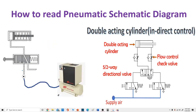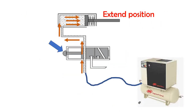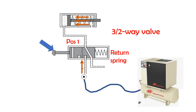Our next topic is how to read a pneumatic schematic diagram. This is a single-acting cylinder: it is to advance when a push button is pressed, and the cylinder is to remain in the advanced position until you release the push button. When you release the push button, the cylinder is to retract by a return spring.